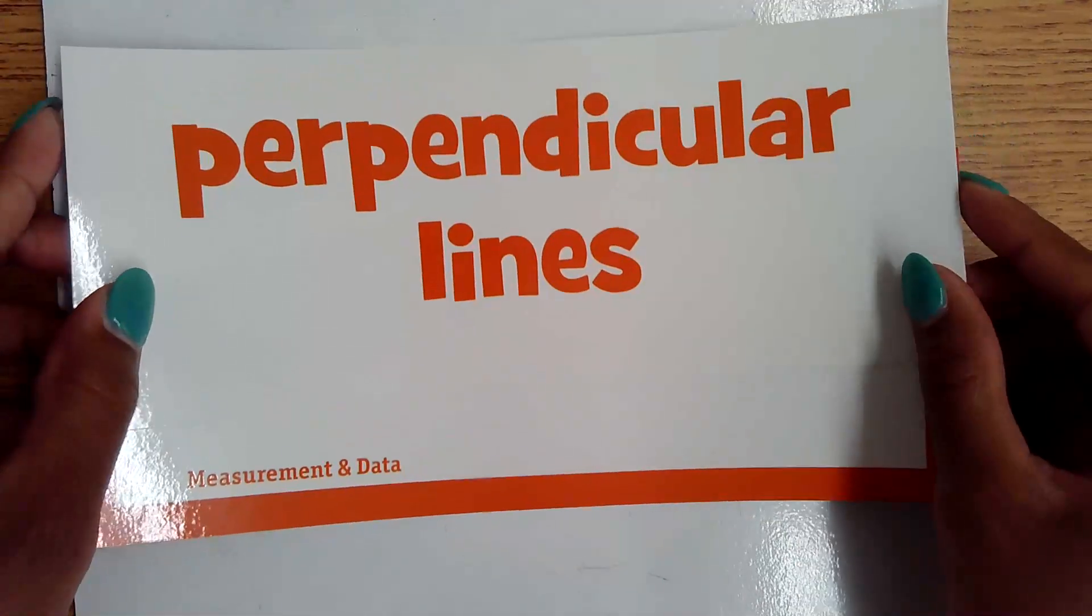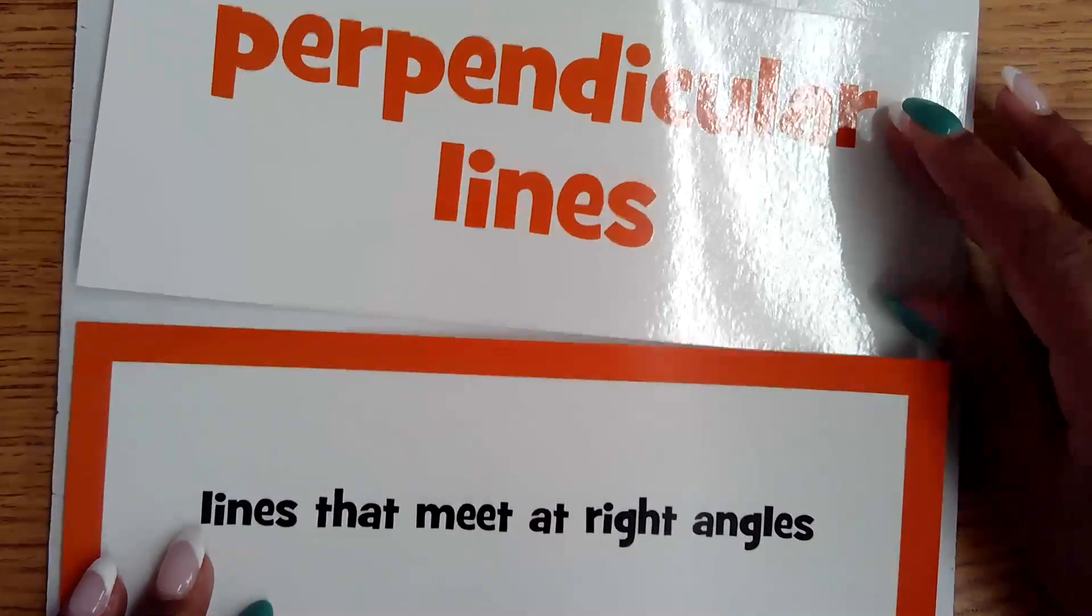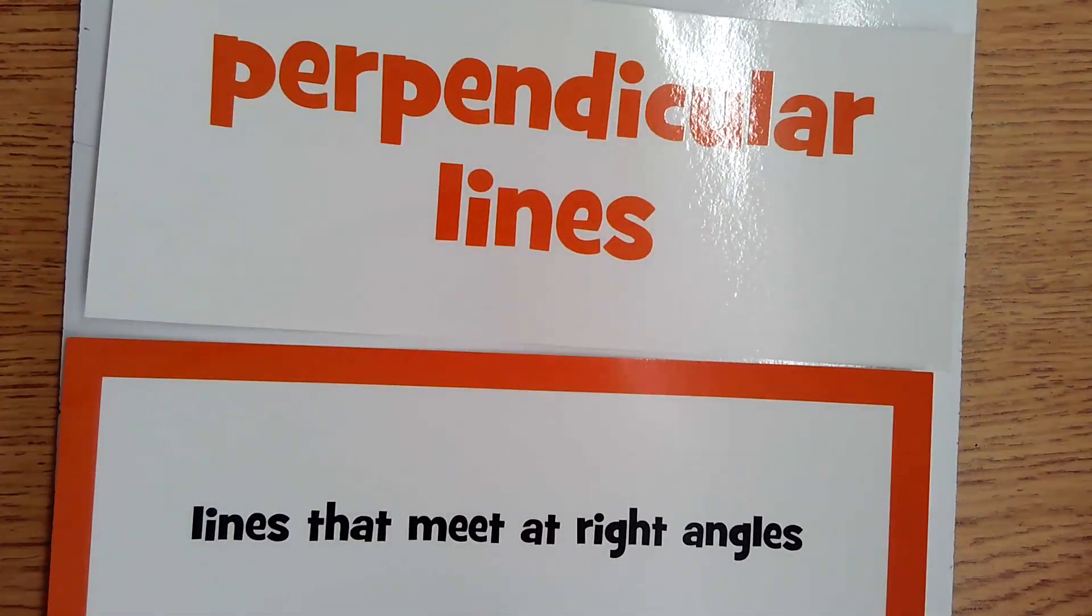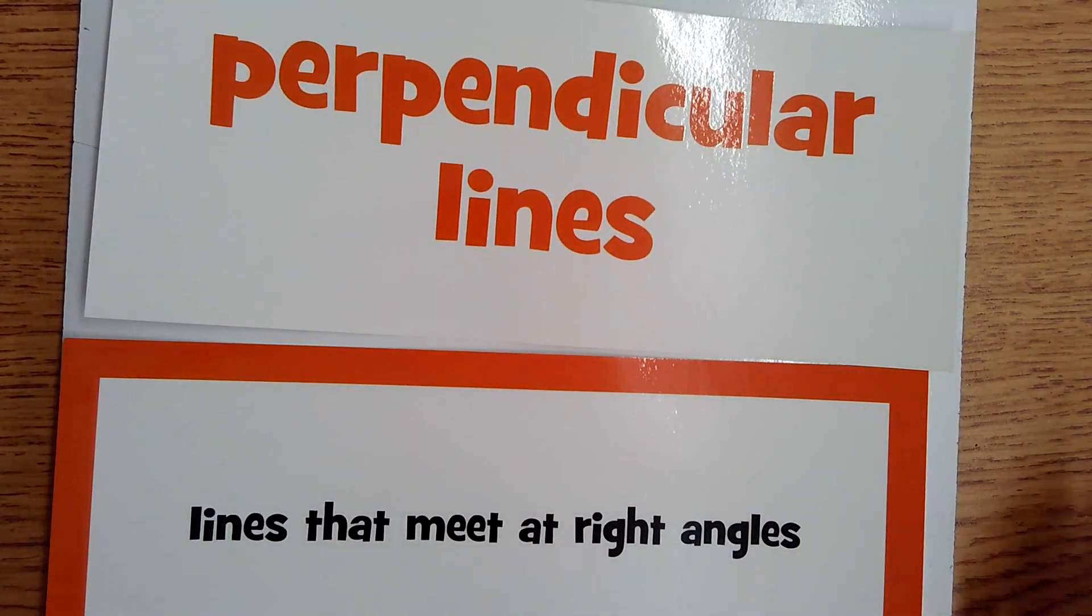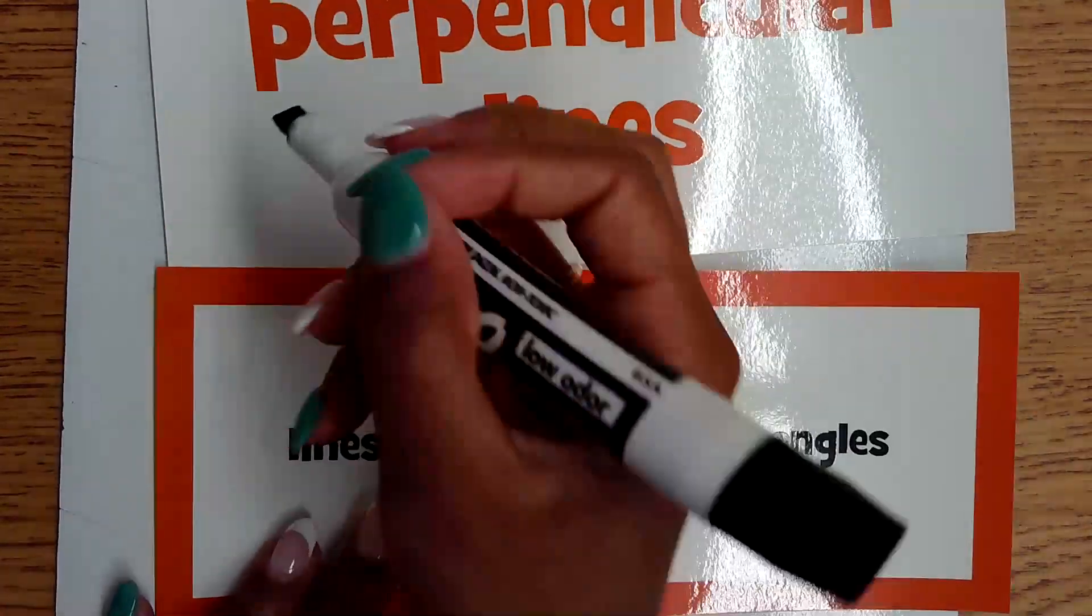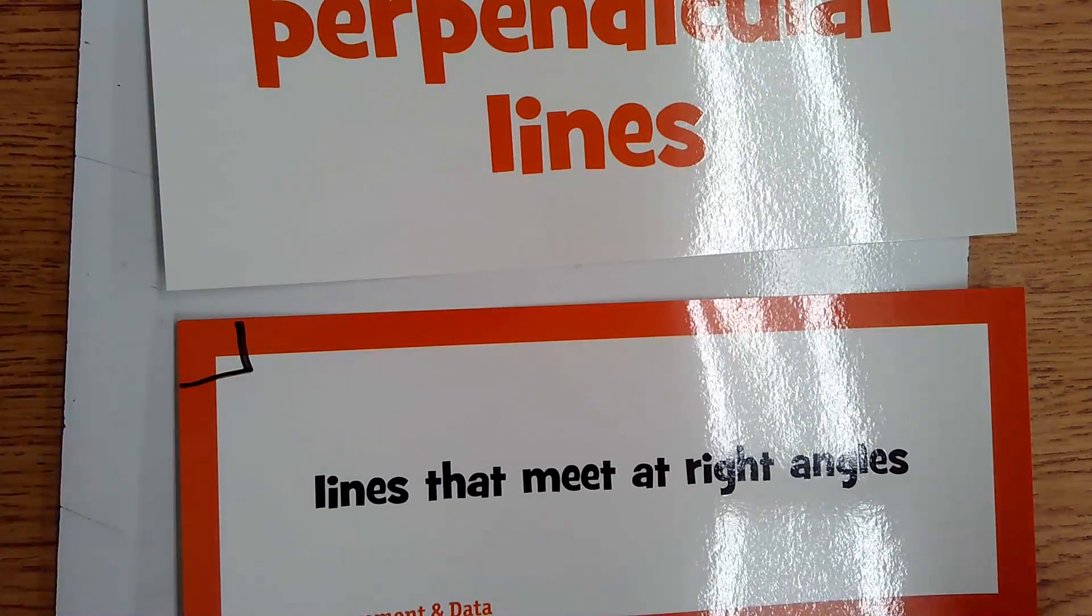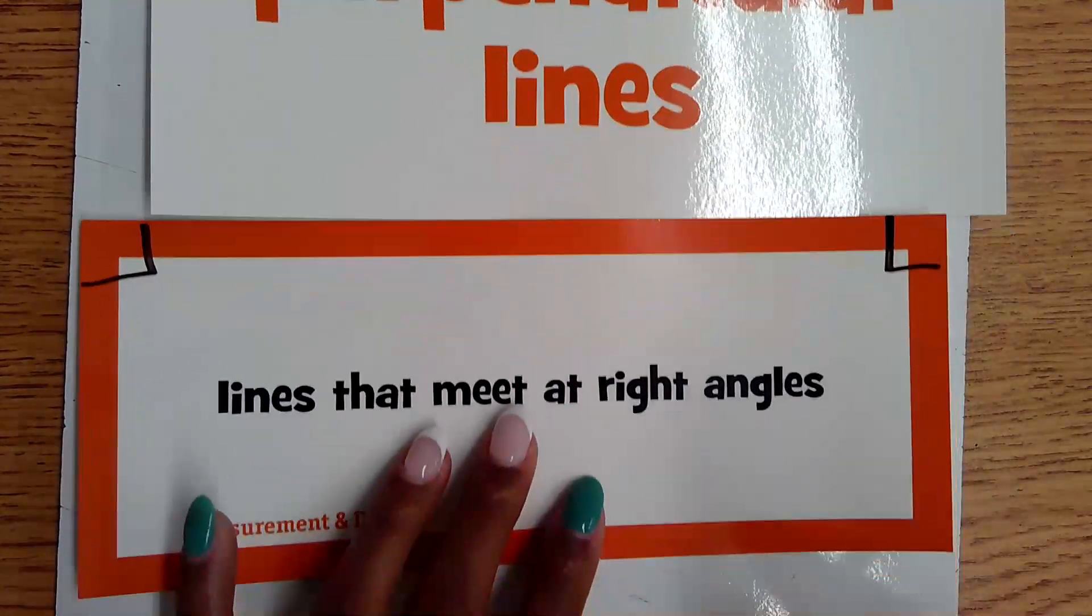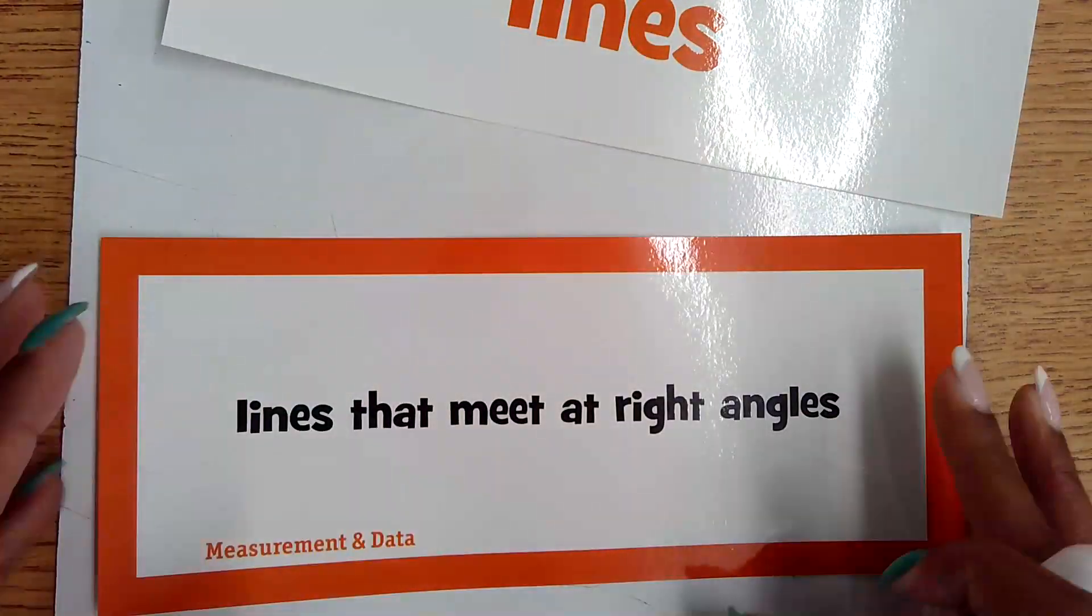Next is perpendicular lines. Perpendicular lines are lines that meet at right angles. So remember, our right angle makes that perfect corner, and that is where we have our 90 degree angles. Even on this vocab card, we have a set of perpendicular lines. This corner right here meets at a right angle, so it's this corner and the opposite two corners that we can say this card is a rectangle.